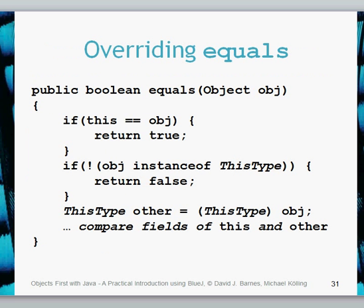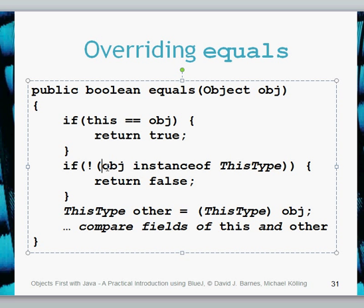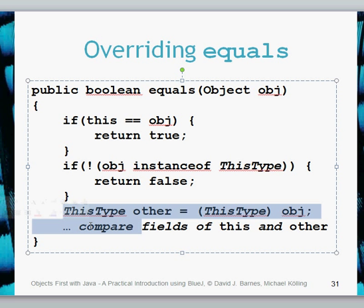To make the equals method work correctly, we may need to override it. First, we check if reference equality is correct — if they're actually the same object, return true, since they contain the same fields. If not, we check if the objects are of the same type using the instanceof operator. If it's not an instance of the correct type, we return false, because if they're not the same type of object, they can't be equal. Then we do the remaining comparisons to check the objects' fields are equal to each other.